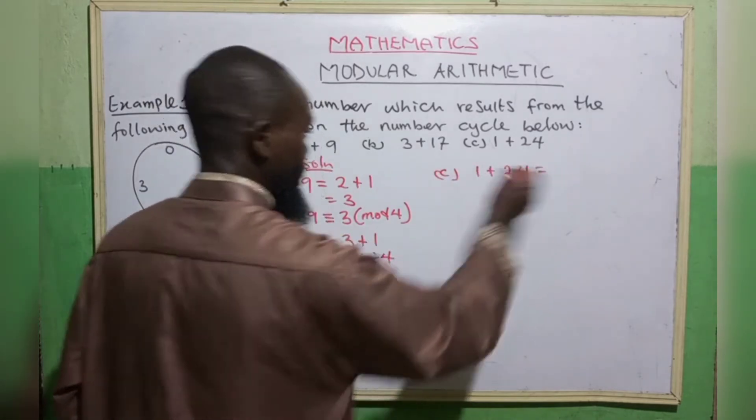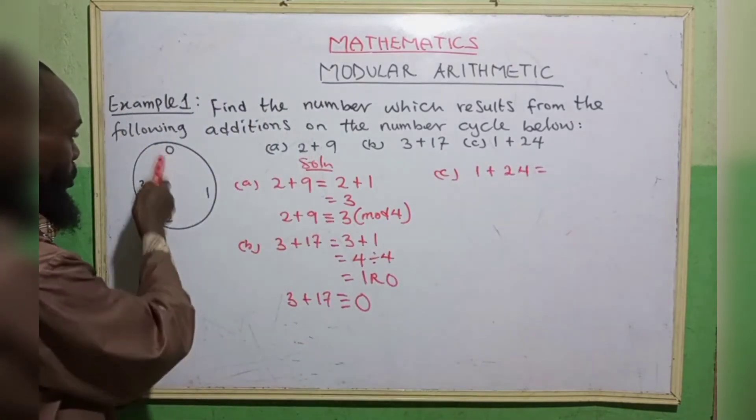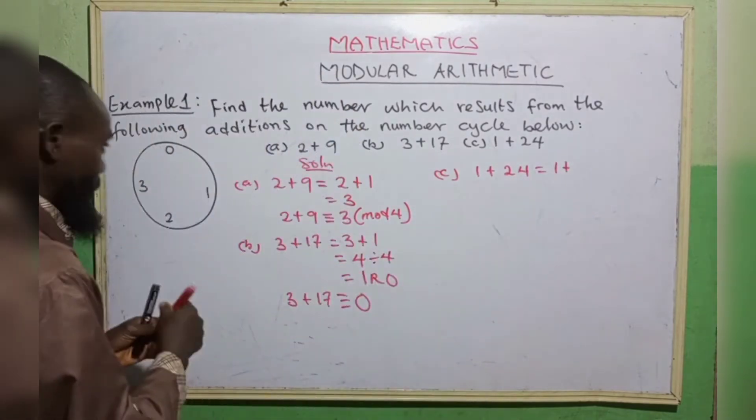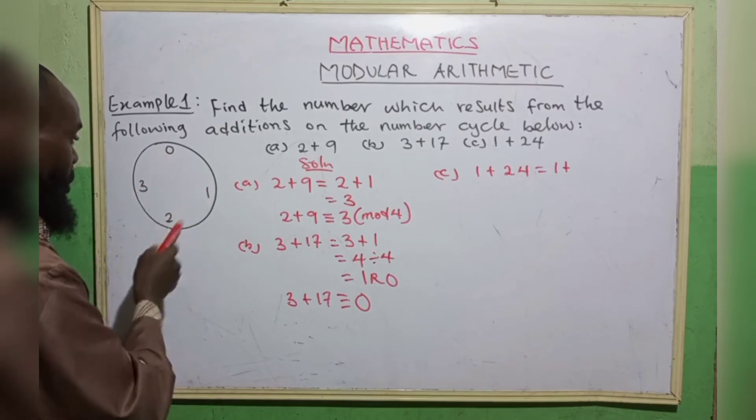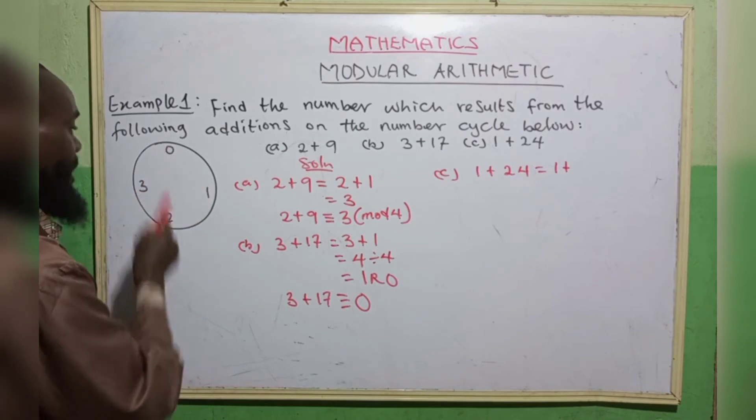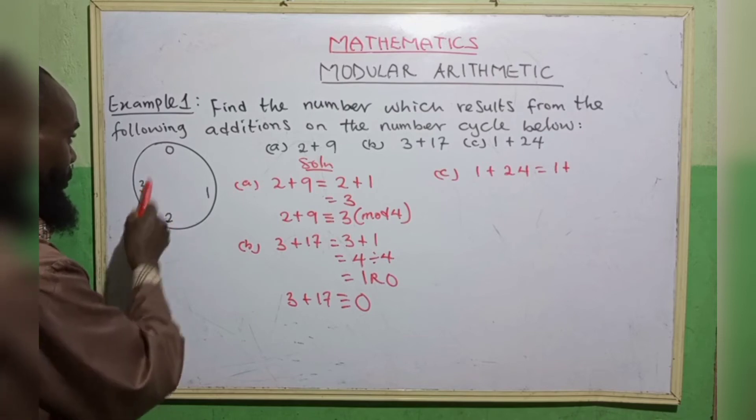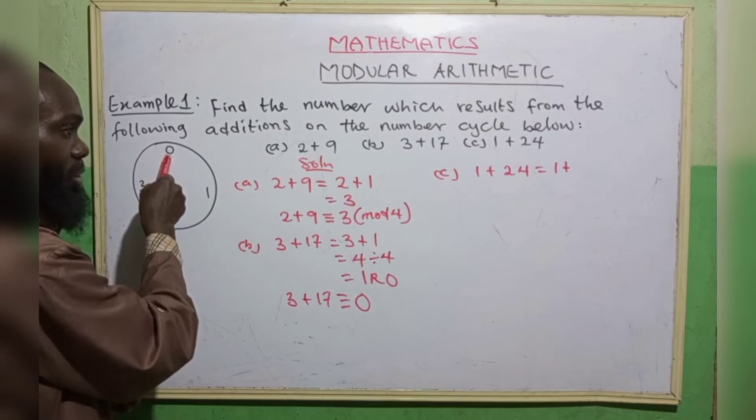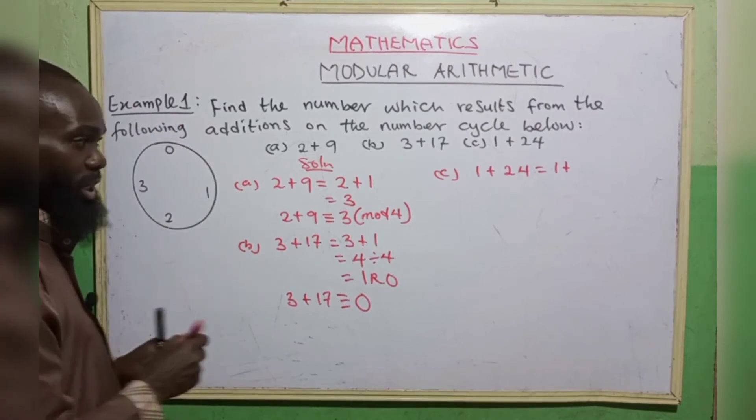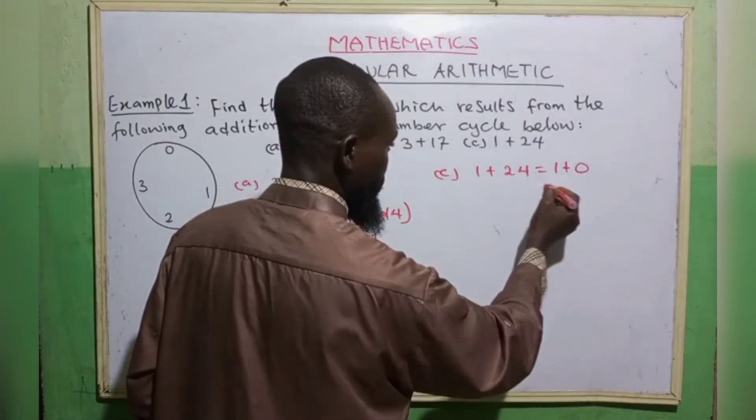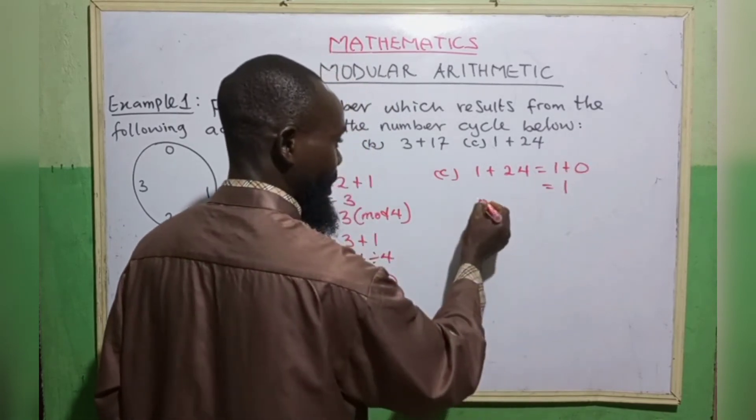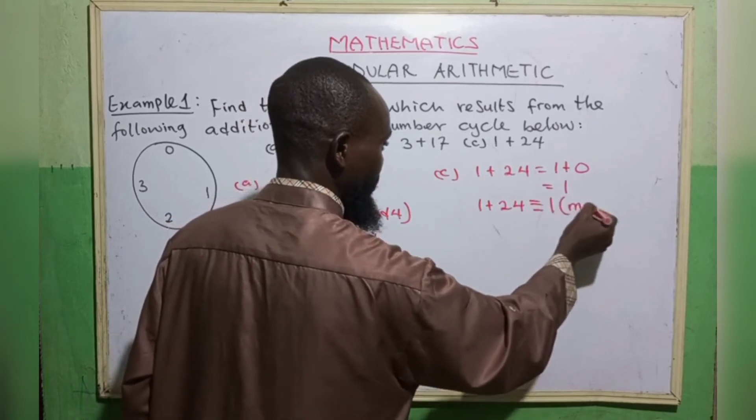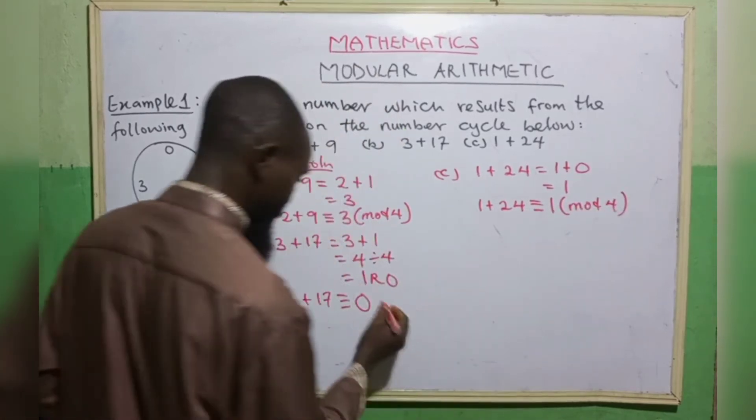The third one, 1 plus 24. Now for the 1, this is 0, 1. So 1 is equivalent to 1 plus 24. When you start counting, this is 0, 1, 2, 3, 4, 5, 6, 7, 8, 9, 10, 11, 12, 13, 14, 15, 16, 17, 18, 19, 20, 21, 22, 23, 24. So when you move around the clock, 24 is equivalent to 0. So 1 plus 0 gives 1. Definitely, 1 plus 24 is equivalent to 1 in mod 4.